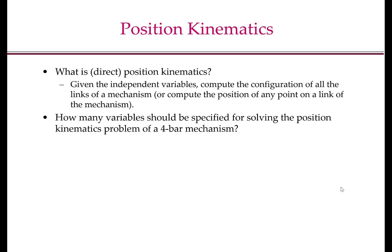The first question that arises is: what is position kinematics or direct position kinematics? The position kinematics problem can be stated as: given the independent variables, compute the configuration of all the links of a mechanism, or compute the position of any point on the link of the mechanism. The first question here is how many independent variables there are and what these independent variables are for any given mechanism. So let us first look at the four-bar mechanism.